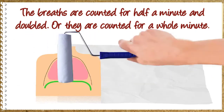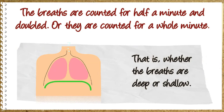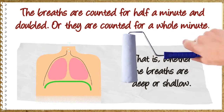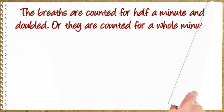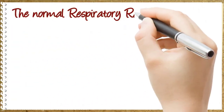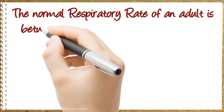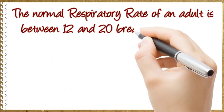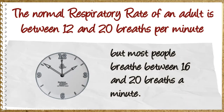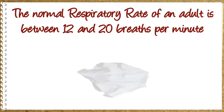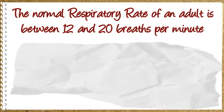That is, whether the breaths are deep or shallow. The normal respiratory rate of an adult is between 12 and 20 breaths per minute, but most people breathe between 16 and 20 breaths a minute. This is called eupnea.